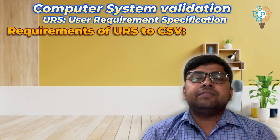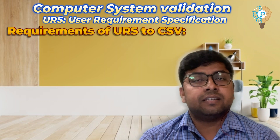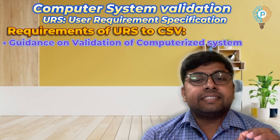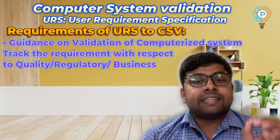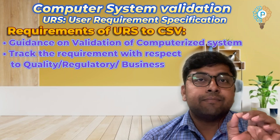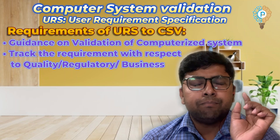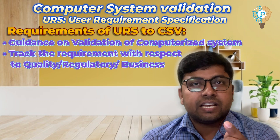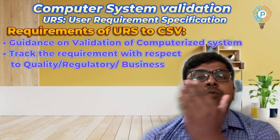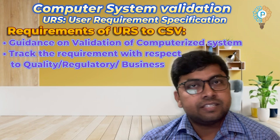What is the requirement of URS to CSV? There are several requirements. Business requirement is one, and regulatory requirement is another. It guides the validation of the computerized system. It tracks the requirement with respect to quality, regulatory, as well as business. It is a tracking process — what you are going to deliver through the computer system validation is simply tracked through this documentation. Based on this initial document, you will further proceed for the functionalities and further requirements. This is your guiding document to proceed for a computer system validation.